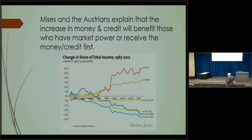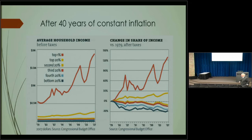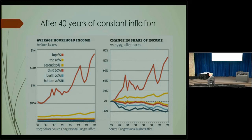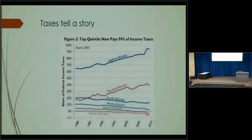A lot of people think there are going to be some major problems with the stock market. This chart shows average household income change since 1970 — the last time we were on the gold standard with monetary discipline. From the Congressional Budget Office, you can see who's benefiting from the inflation: the upper income earners. The rest of us are stalled.